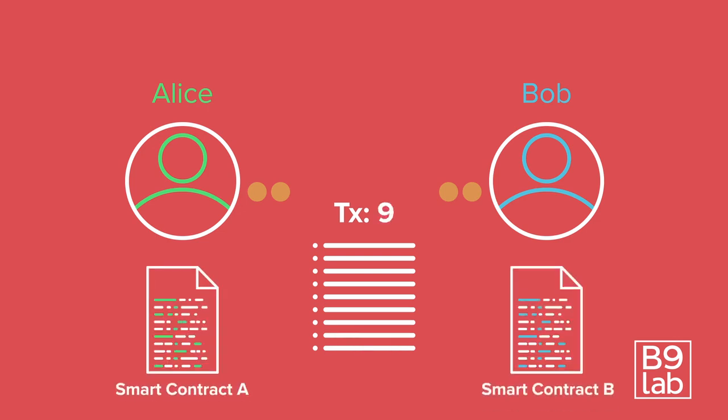Transactions are bundled into blocks by validators. These can be miners, like in Bitcoin for example. Each block contains a signature of the previous block, so the whole dataset can be verified and validated.